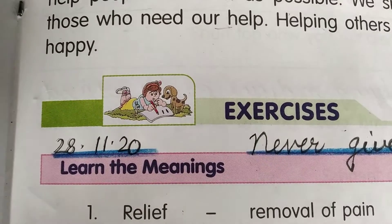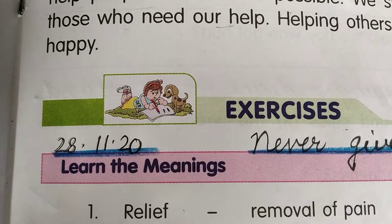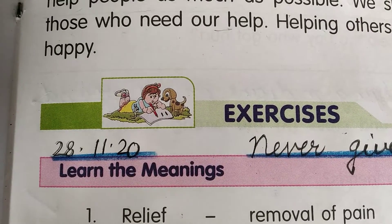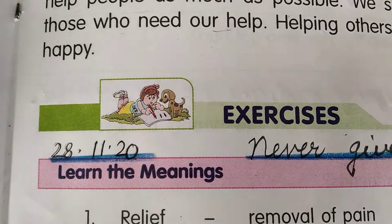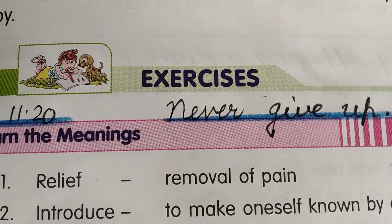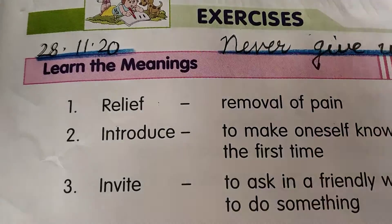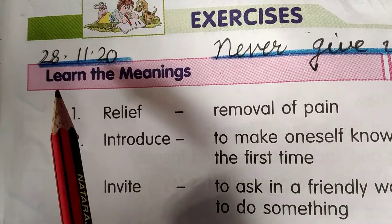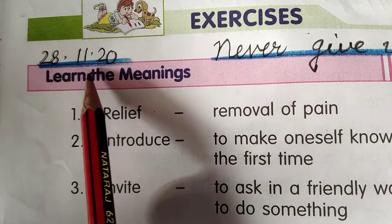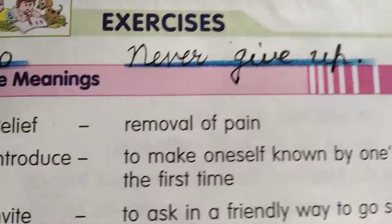We have already learnt about this chapter — about Raju. Raju was a helpful boy and a good boy. So today we will do the exercise of this lesson. Write down today's date: 28.11.20, and the quotation is: never give up.